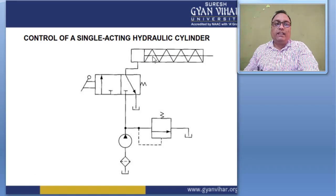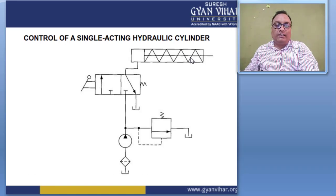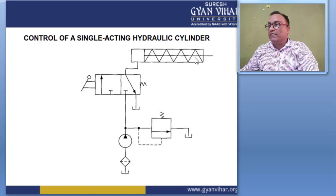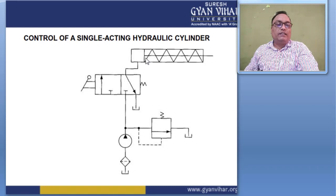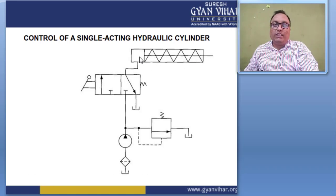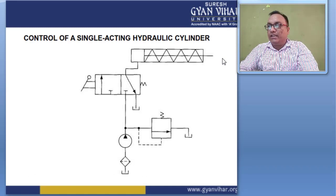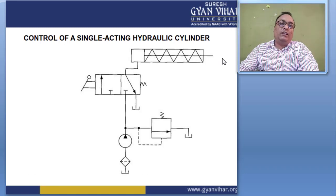The single acting hydraulic cylinder has a spring-loaded piston. When the load is released, the spring pushes the piston backward. If the cylinder moves from left to right, this is the loading condition. If the cylinder moves from right to left, this is the unloading condition. So the cylinder can extend under hydraulic pressure and retract via the spring.